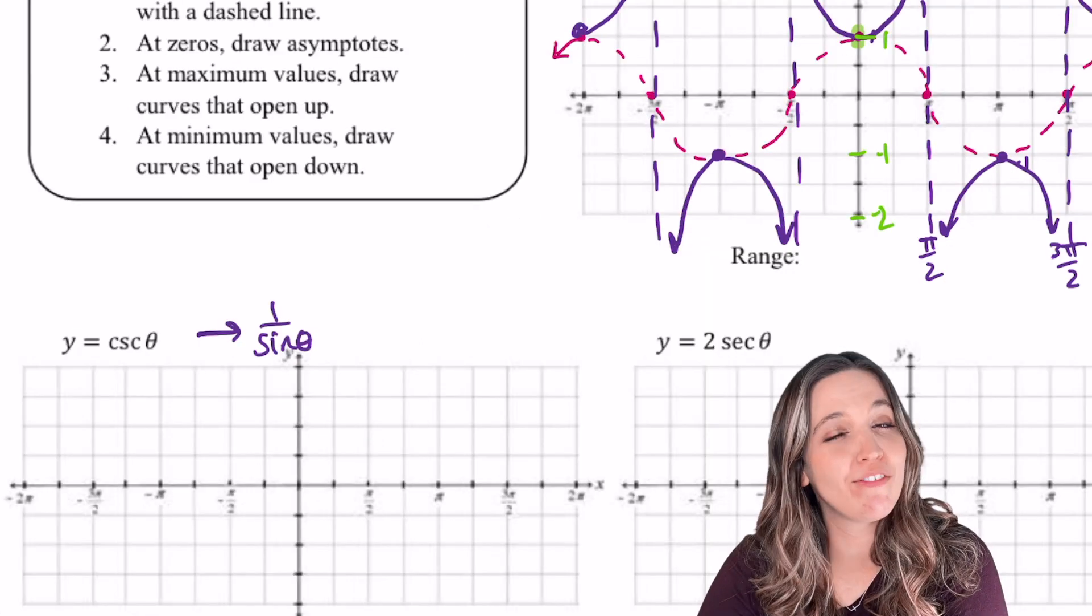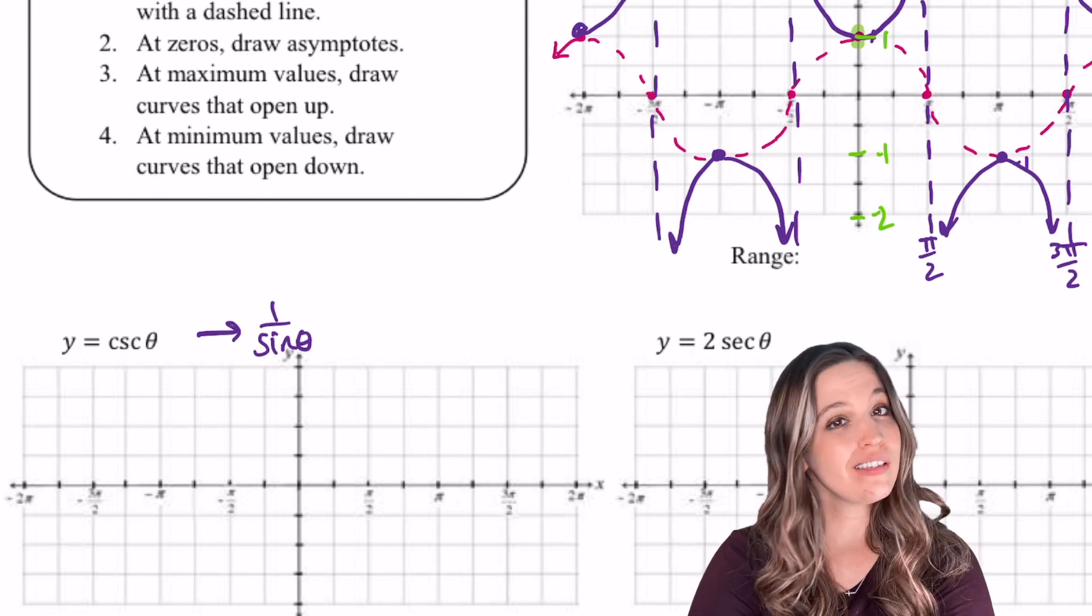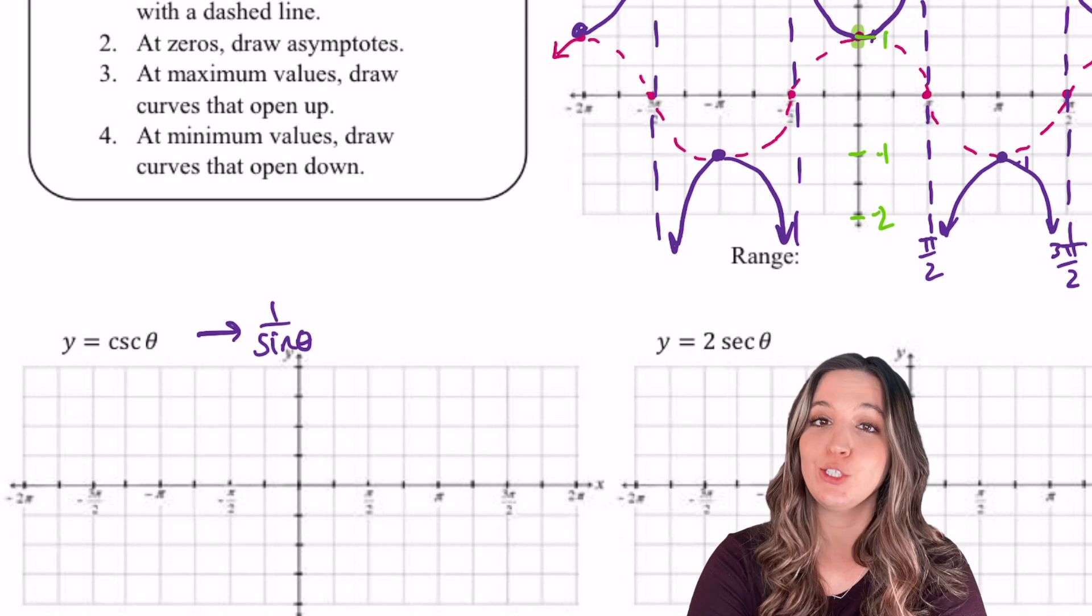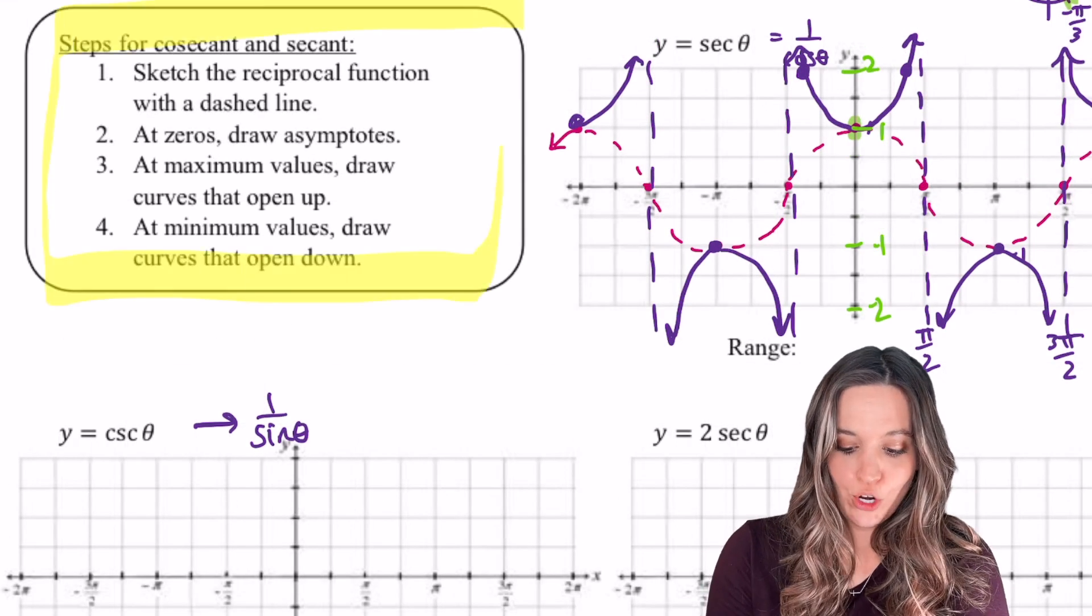Now it's time to graph cosecant. Now cosecant is 1 over sin θ. So it's similar to secant, but now we'll start with a dashed graph of sine. Follow the steps and see if you can sketch cosecant.